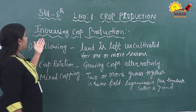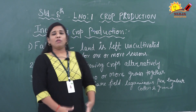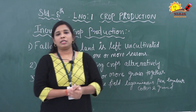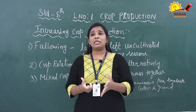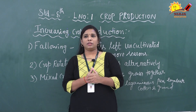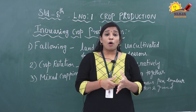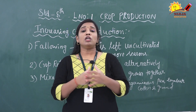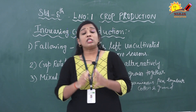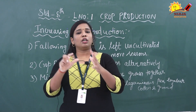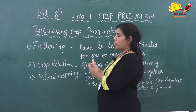Now we are getting to the particular portion, that is increasing of crop production. Why do we want to increase crop production? At present in India, population increases by about 20 million every year. According to that, our food requirement also increases. Our population is now over 1000 million, and yet we are able to grow sufficient food to feed this huge population. So definitely we need to increase our crop production.